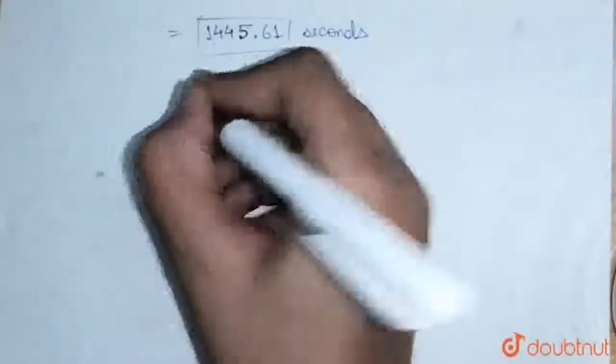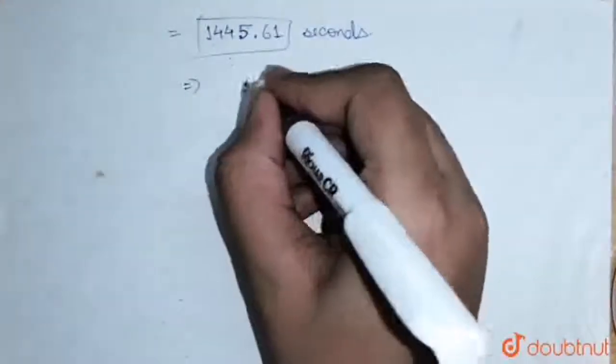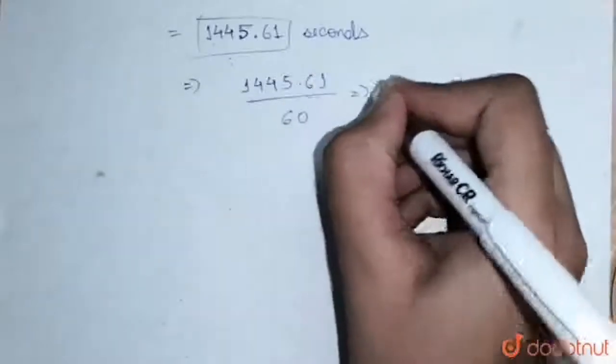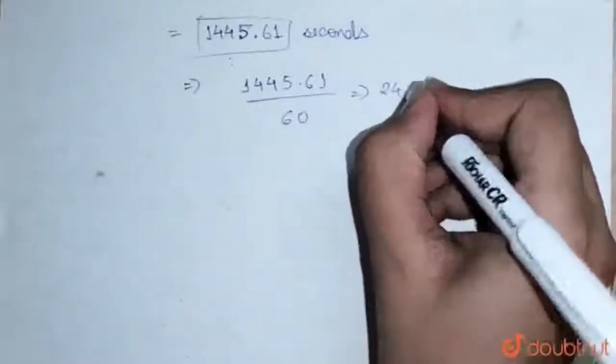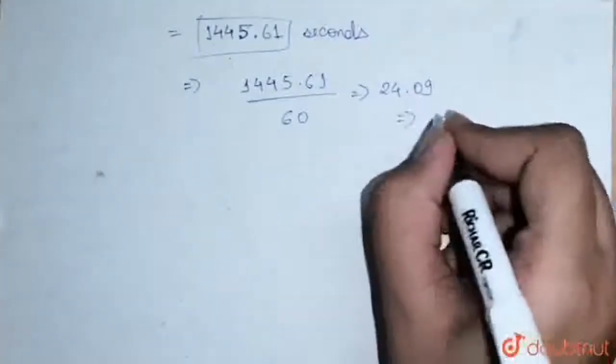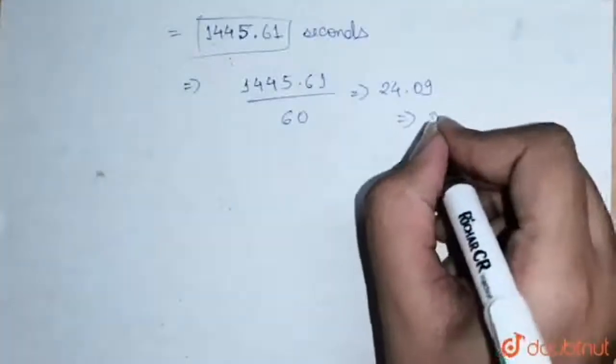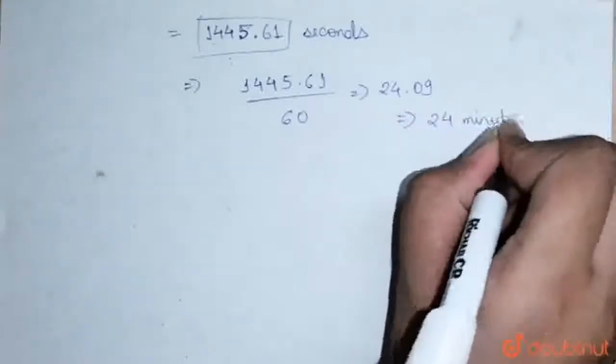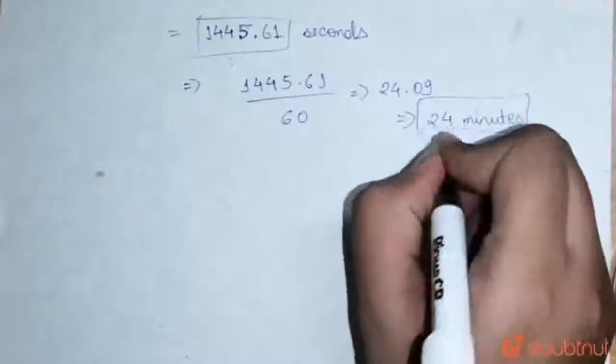To convert it into minutes, we divide by 60. That is, 1445.61 divided by 60 equals 24.09. We need the approximate value, not decimal value, so 24 minutes. This is our answer.